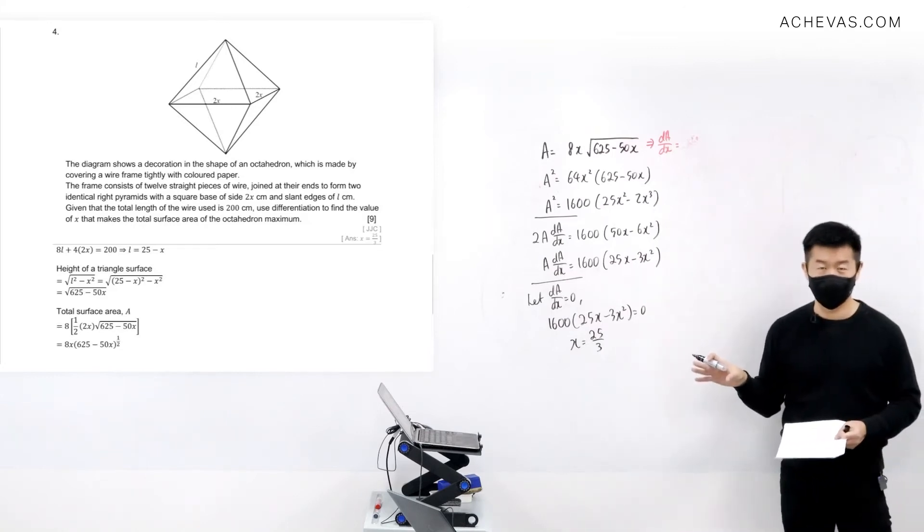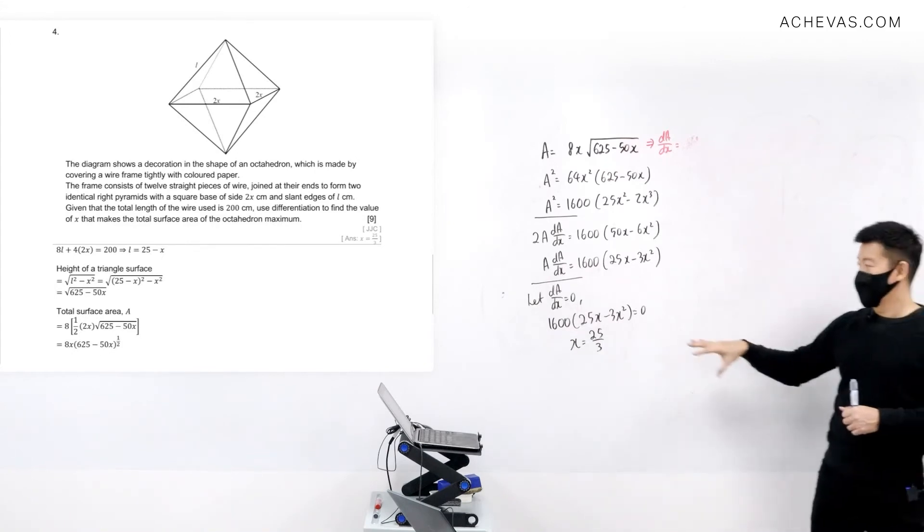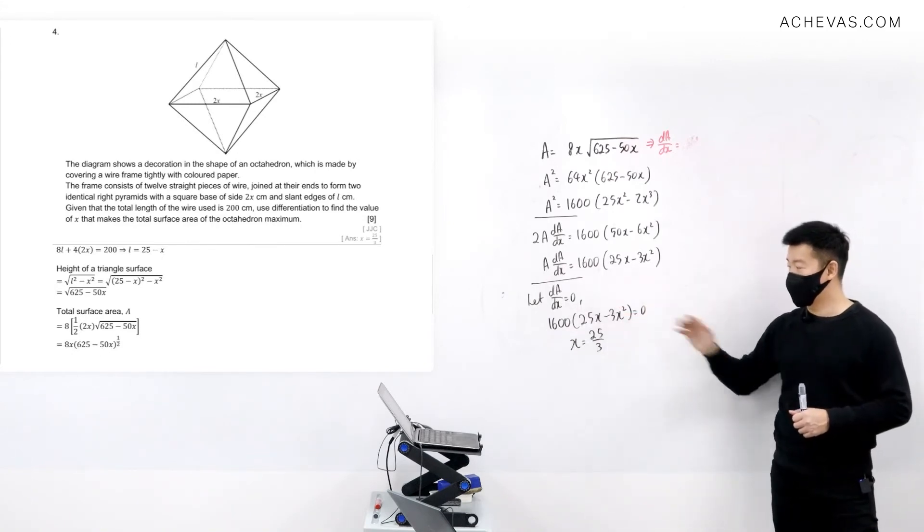So if you were to solve for this, x is going to be equal to 25/3. x cannot be equal to zero, so x = 25/3. But like what we have mentioned, even if I manage to get just one realistic value for x...